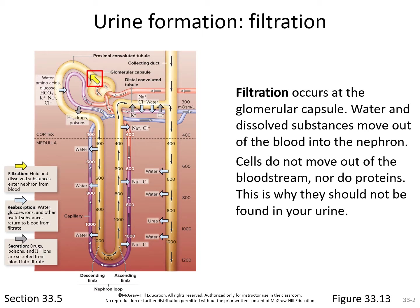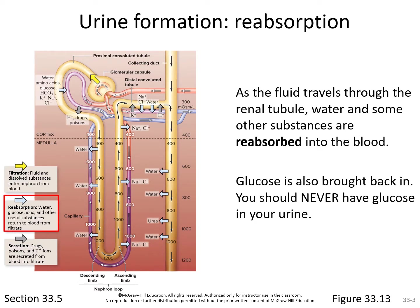Cells are too big to move through this filter, and so are proteins — which is why they shouldn't be found in urine. As the fluid travels through the renal tubule, water and other substances get reabsorbed into the bloodstream. Filtration means moving from the bloodstream into the nephron tubes; reabsorption means pulling something back into the bloodstream. The kidneys do a kind of 'throwing the baby out with the bathwater' — throwing out the good with the bad, but then spending time reabsorbing substances back.